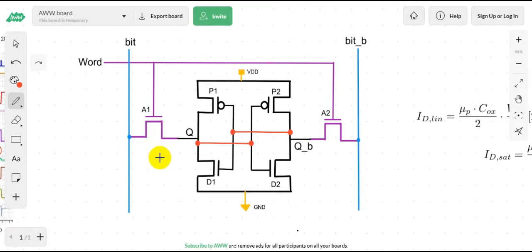Okay, so during read operation let's say Q is 0 and B is 1. Q was trying to rise and flip the data due to the current flow through the A1 transistor, right?